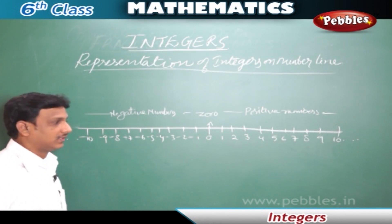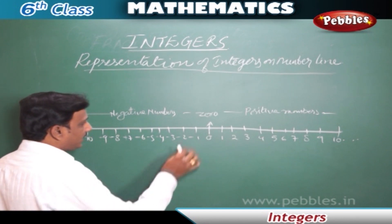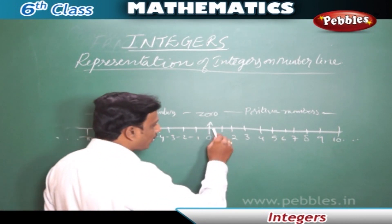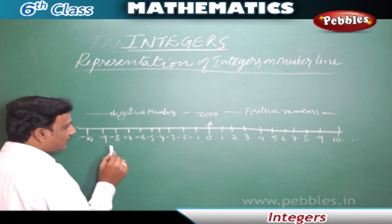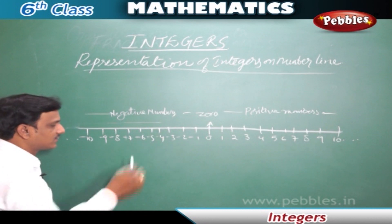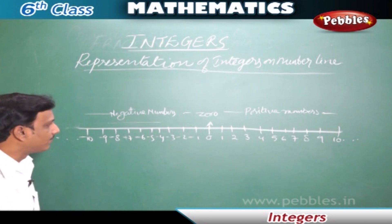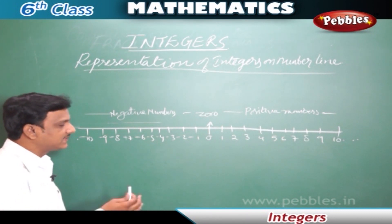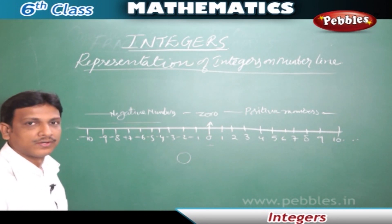Representation of integers on a number line. At the center of this number line, we have 0. On the right side of 0, all these numbers are positive numbers. The numbers which lie on the right side of 0 are positive numbers. On the left side of 0, we find negative numbers — whatever numbers are on the left side of 0 are called negative numbers. From this number line, we get answers to many questions. Which integer on this number line is neither positive nor negative? Zero. 0 is neither negative nor positive.